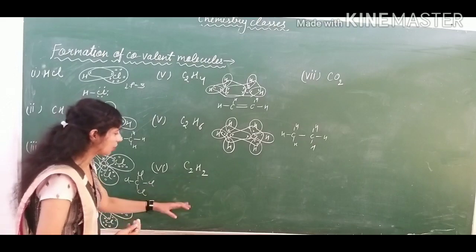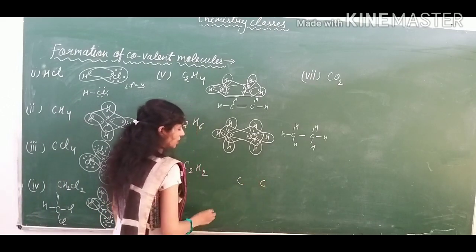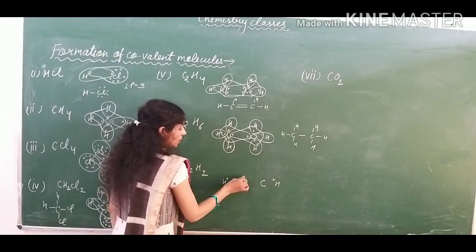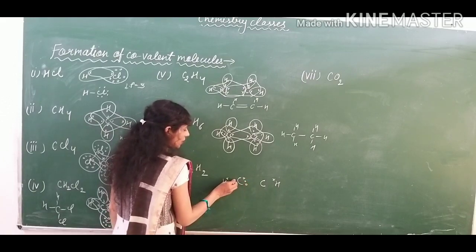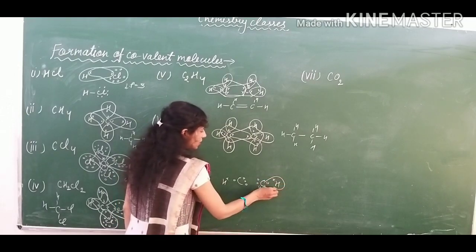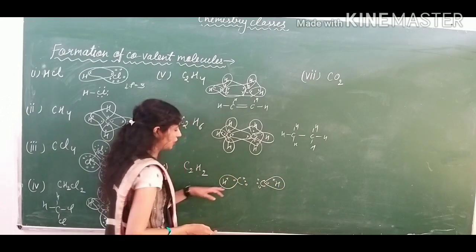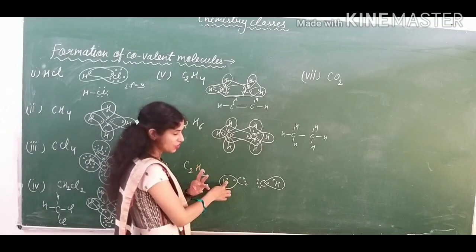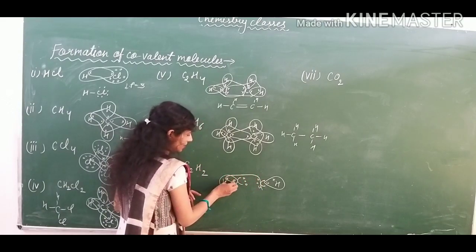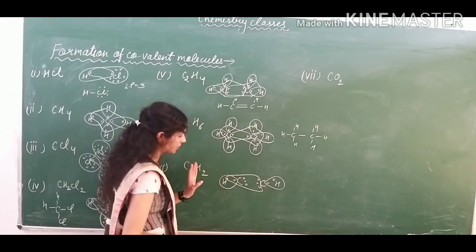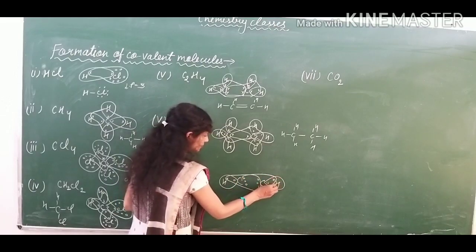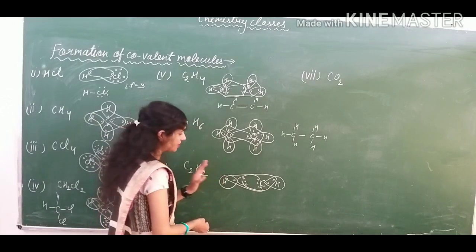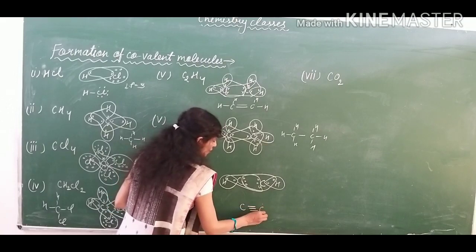Now for C2H2 — acetylene — two carbons will take two hydrogens and equally distribute one hydrogen on each carbon. Carbon has four electrons in its outer shell. The hydrogens will complete their duplet by sharing one electron with carbon. Carbon still needs three more electrons after sharing with hydrogen — four already present, one shared with hydrogen gives five, so three more are needed. Carbon and carbon will share three pairs of electrons between them. Six electrons are participating in bonding between the two carbons. So the structure of C2H2 has a triple bond between the two carbon atoms.